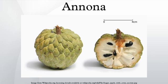Annona species are tap-rooted, evergreen or semi-deciduous, tropical trees or shrubs. The fruit typically grows in areas which do not get below 28 degrees, such as Cuba, Jamaica, and the Philippines; however, it has been known to grow in certain areas of Florida.